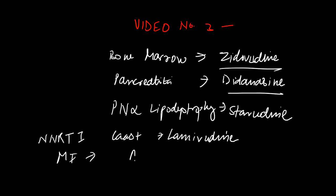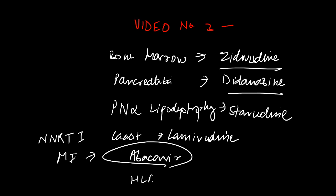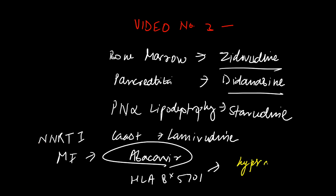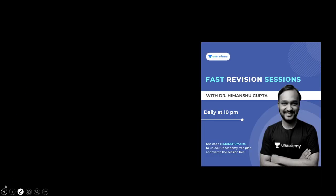Myocardial infarction is associated with abacavir. Patients taking abacavir who have the HLA B*5701 allele are also more prone to hypersensitivity reaction. This covers the key NRTI side effects.